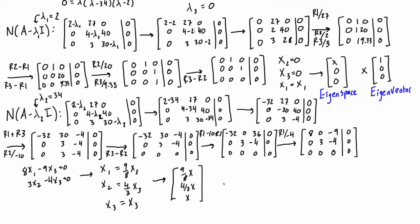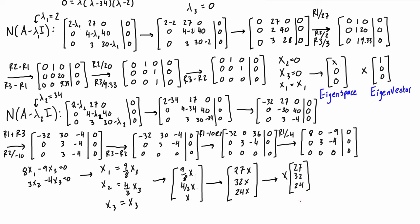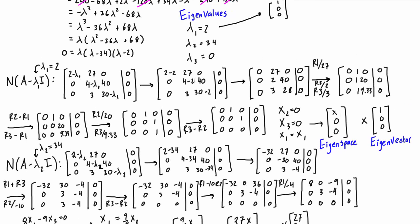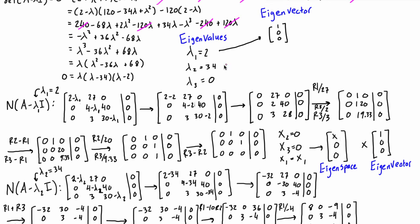We can clean this up because fractions inside vectors can be a bit nasty. We multiply each element by 24, giving us 27x, 32x, and 24x — a cleaner vector. Either form describes the same eigenspace. We pull out the x, and the vector left over — [27, 32, 24] — is an eigenvector belonging to λ₂. Any multiple of this vector is also an eigenvector belonging to λ₂, but if the problem asks for a single example, we can write it up as the eigenvector for this eigenvalue.